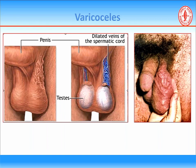Varicoceles are dilated veins in the spermatic cord. The overarching hypothesis is that they increase temperature around the testis, which is normally outside the body at around 34 degrees C compared to core body temperature of 37 degrees C. New literature also shows that varicoceles can affect not just sperm production and motility but also testosterone production from the Leydig cells.